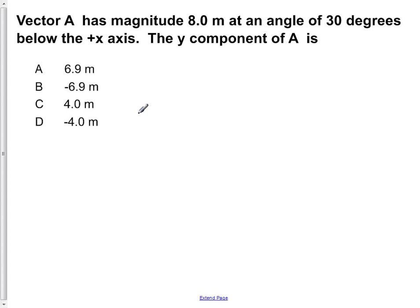Vector A has magnitude 8 meters at an angle of 30 degrees below the x-axis. The y component of A is... So the first thing to do here is to draw out a picture of what we have.